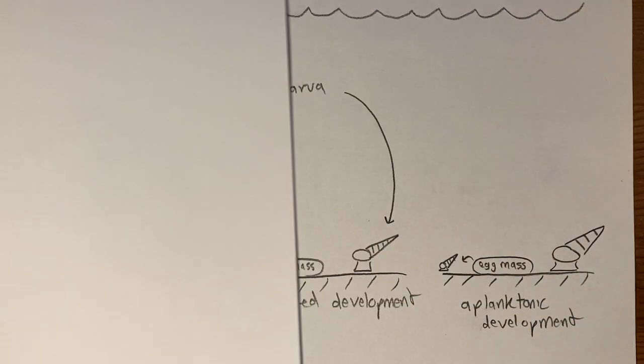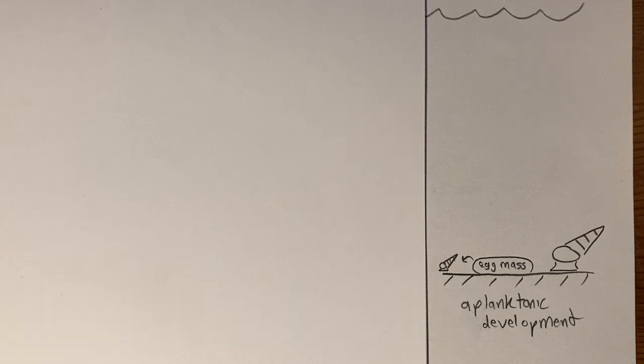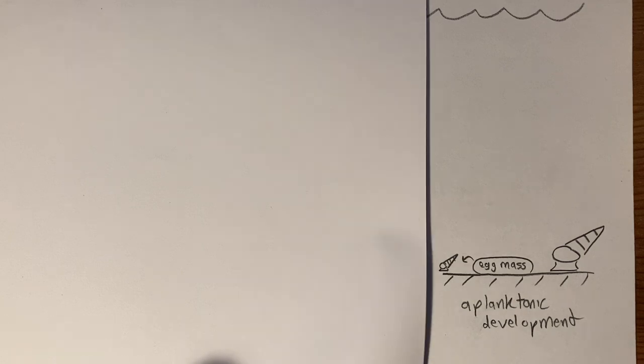In other species, all of larval development happens on the seafloor in an egg mass, an egg capsule, or on or inside a parent. The larval stage is passed in one of those protective structures, then metamorphosis happens and a juvenile exits the protective structure. We can call those aplanktonic life cycles.